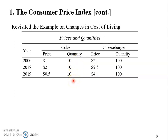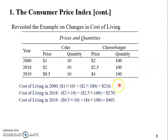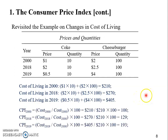Remember, we artificially keep the quantity fixed or constant over time to remove any influence of change in quantity. If there's no influence from change in quantity, then it doesn't matter which number we use — 50, 10, 5, whatever we want. Now let's check if that is the case. First of all, we have to recalculate the cost of living. It's $210 in year 2000, $270 in 2018, and $405 in 2019.